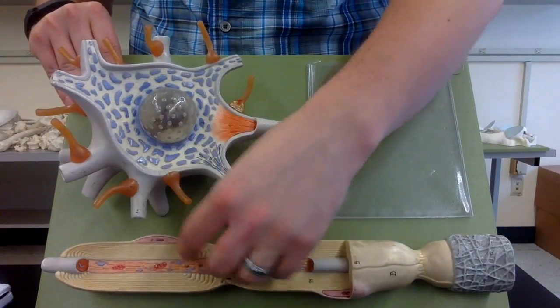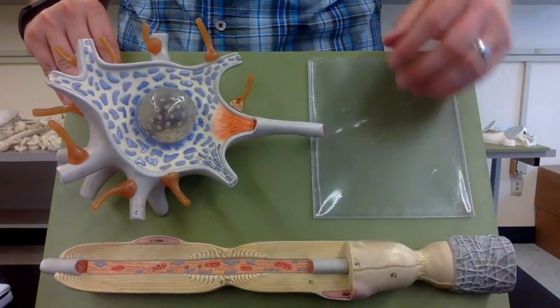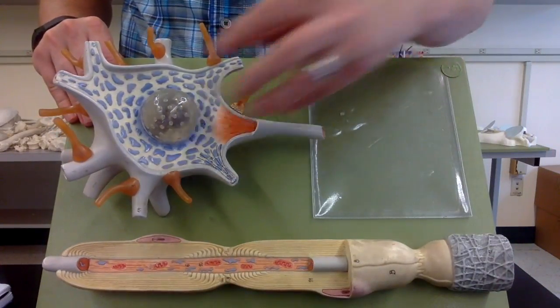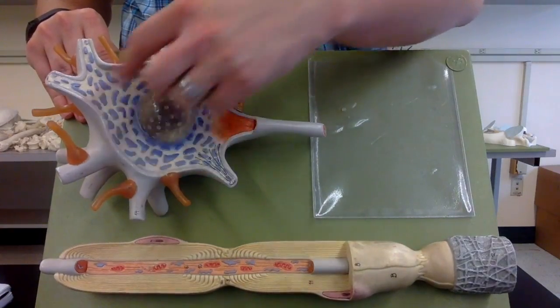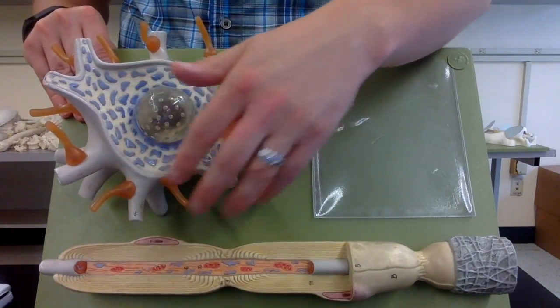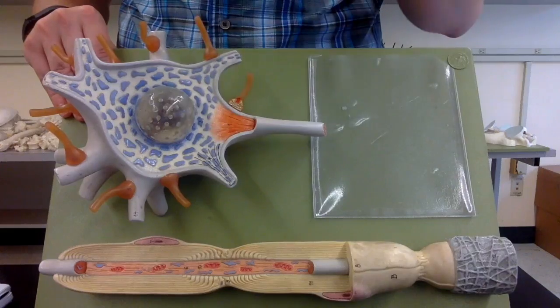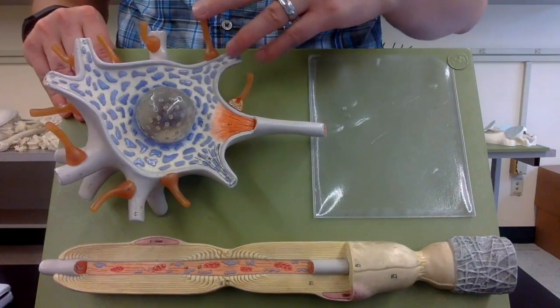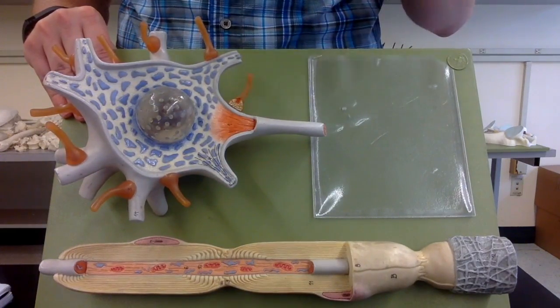The first structure we're going to talk about for the neuron, which is this whole thing, is the cell body. So the cell body is this structure right here, and it's this whole thing with all these gray pieces and orange pieces coming off of it. The gray and orange pieces coming off of it are not part of it.